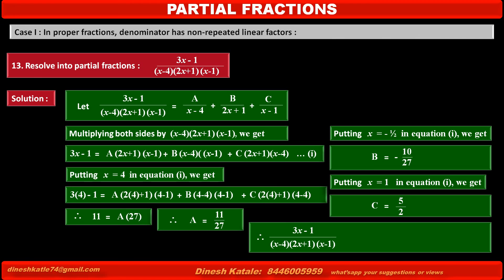Therefore, the given fraction (3x minus 1) upon (x minus 4)(2x plus 1)(x minus 1) equals: substituting the value of A, the first term becomes 11 upon 27(x minus 4); substituting B equal to minus 10 upon 27, the second term becomes minus 10 upon 27(2x plus 1); and substituting C equal to 5 upon 2, the third term becomes plus 5 upon 2(x minus 1).